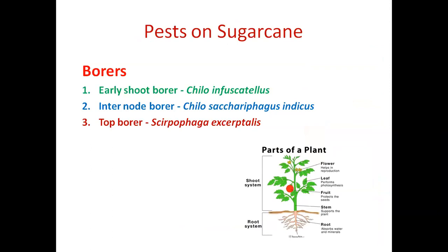Coming to today's topic on pest of sugarcane, before entering the topic, I want to review the plant system and its functions. The plant system is majorly divided into two systems: the root system and the shoot system. In the root system, you can find roots which are important for absorption of water and minerals. In the aerial part, you can find the shoot system, which includes the stem, leaf, flowers, shoot apex, fruits, and seeds — the seeds being very important input for producing the next generation crop.